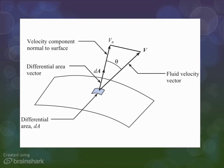But for our quantification of discharge, we're only going to want the component of velocity that's normal to the patch of area, dA. So, that's this V sub n.